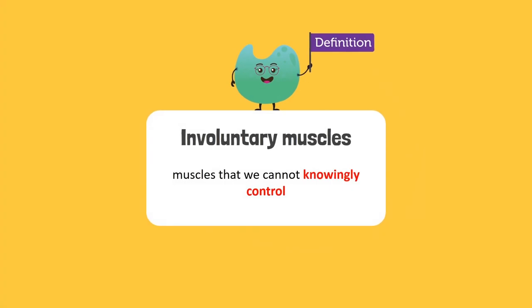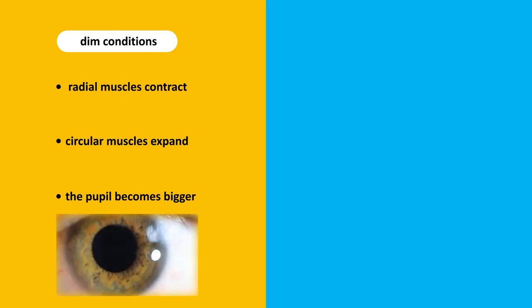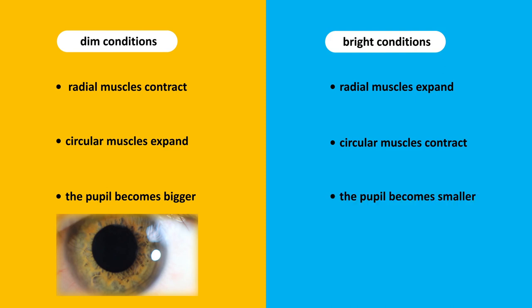These muscles are involuntary. This means that we cannot knowingly control them. In dim conditions, the radial muscles contract and the circular muscles expand. This increases the amount of light that enters the eye. What happens in bright conditions? I think the opposite happens. The radial muscles expand and the circular muscles contract. This makes the pupil smaller.